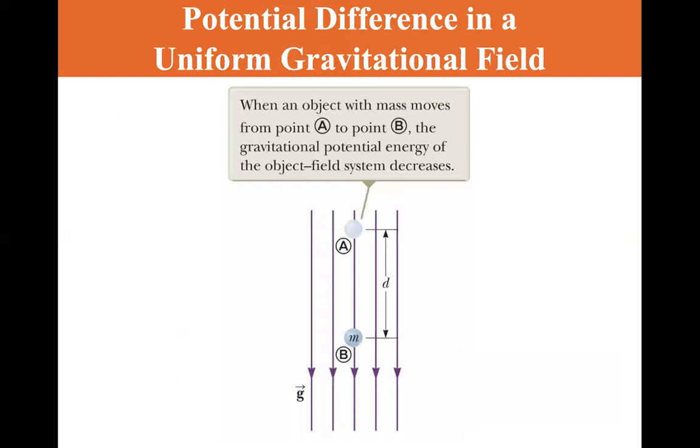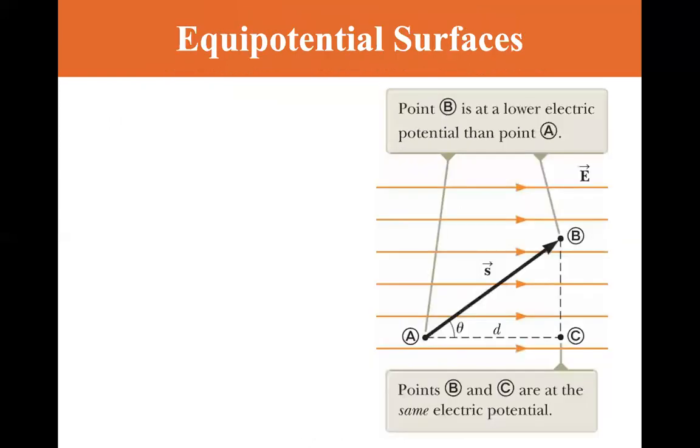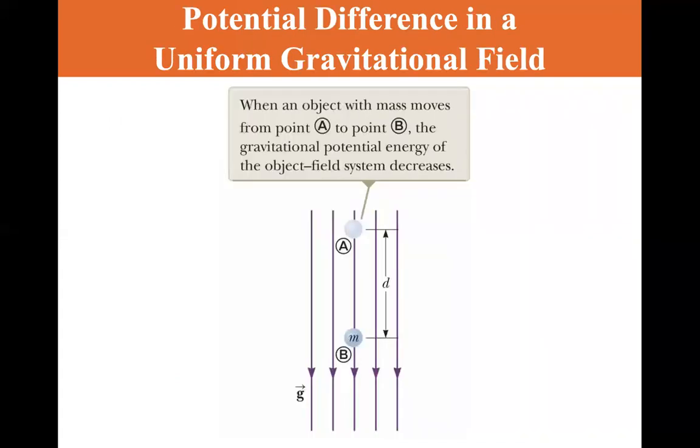Okay, and potential difference in a uniform gravitational field. When an object with mass moves from point A to point B, the gravitational potential energy of the object field system decreases. Now, the difference here is that if we have a negative particle in an electric field, it will go up. We don't have anything equivalent to that in a gravitational field.